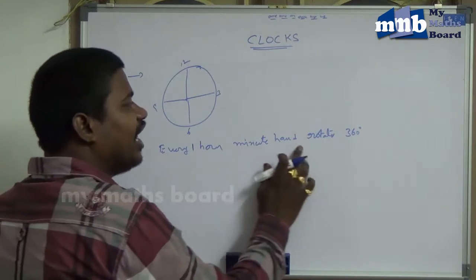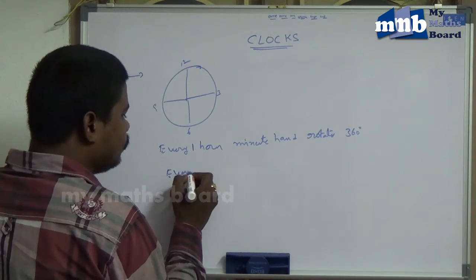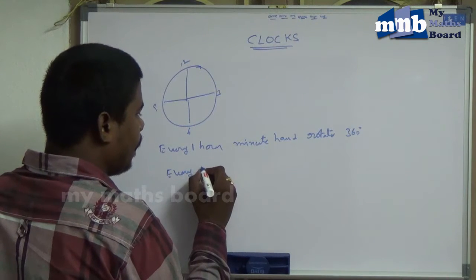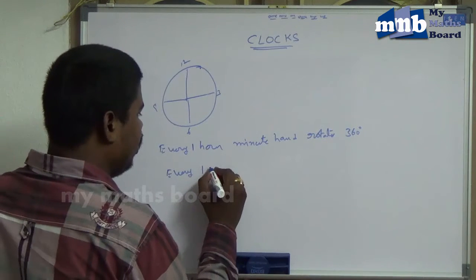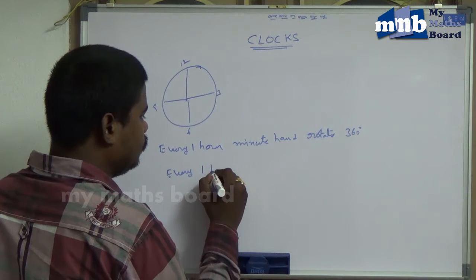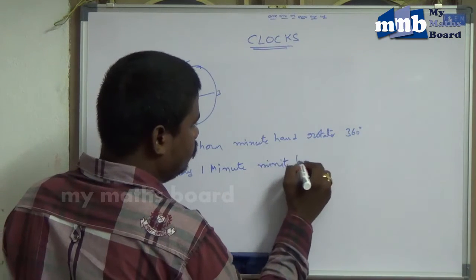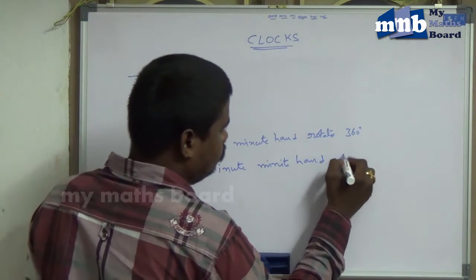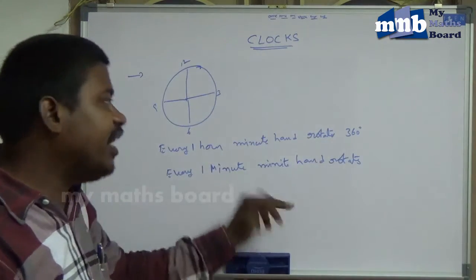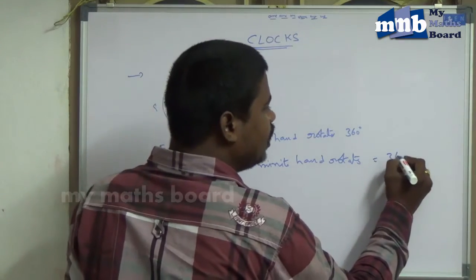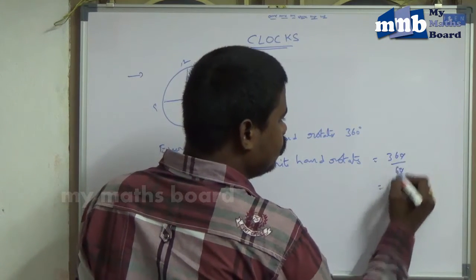That's why every one hour the minute hand rotates 360 degrees. So every one minute, the minute hand rotates how many degrees? That is equal to 360 divided by 60, since the minute hand takes 60 minutes. That gives us 6 degrees.